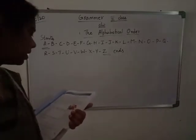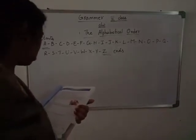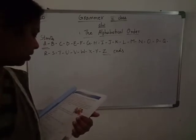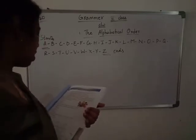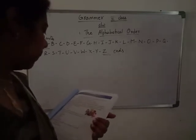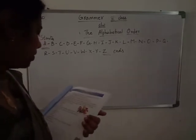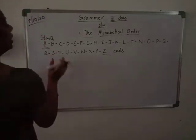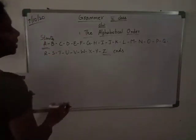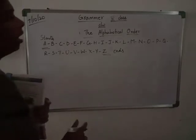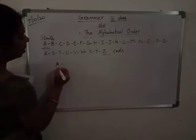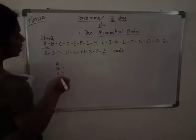We often write lists in alphabetical order. For example, to write a list of countries in alphabetical order, we start with countries that begin with A, then with countries that begin with B, and so on.